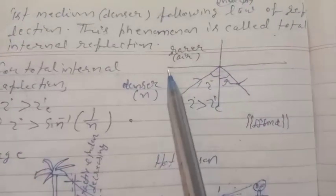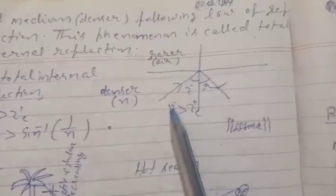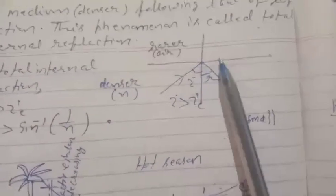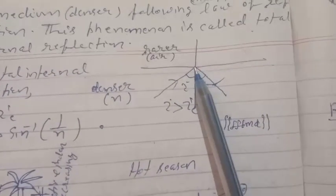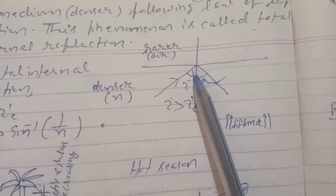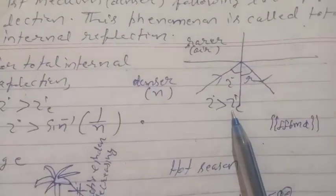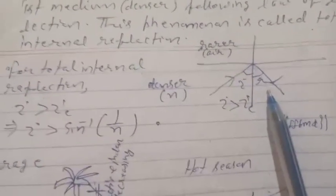For example, the boundary between two media is shown where the upper layer is the rarer medium and the lower layer is the denser medium. Light passes from the denser medium to the rarer medium and strikes at this boundary. When the angle of incidence becomes greater than the critical angle, the light bounces back to the same medium following the law of reflection.